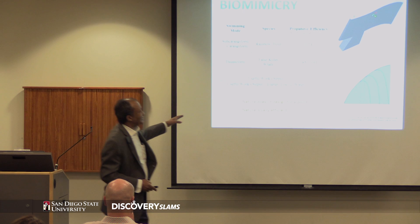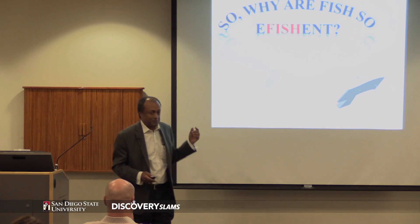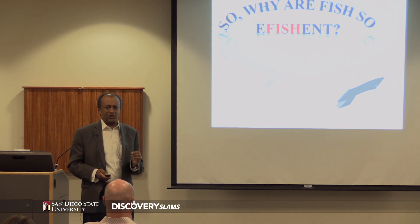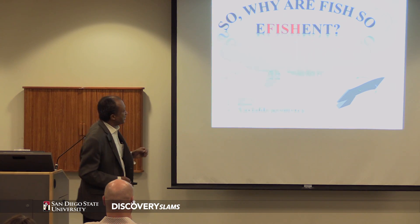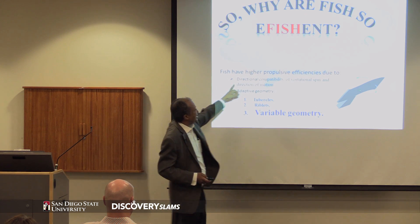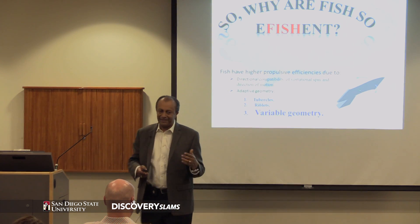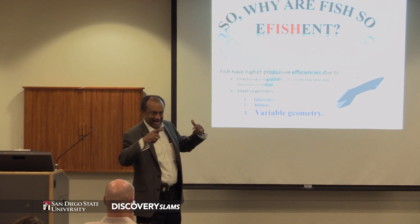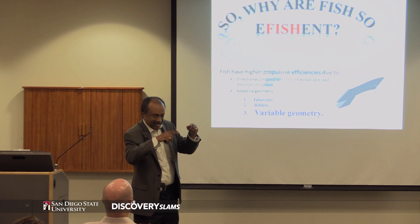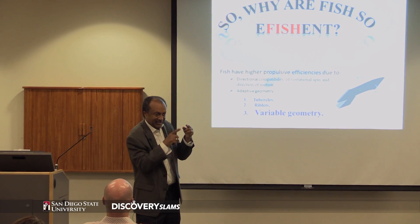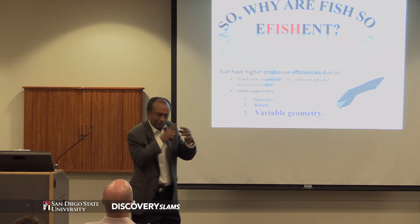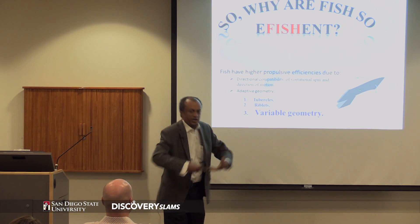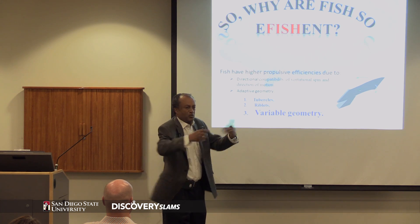Nature doesn't design for a point — nature is very efficient — which brings a question to mind: why are fish so efficient? Number one, they use directional compatibility. Simply put, they create vortices — which is wasted energy behind them — and then recycle that wasted energy to propel themselves forward. We cannot do that unless we are moving; wind turbines don't move, they are stationary.